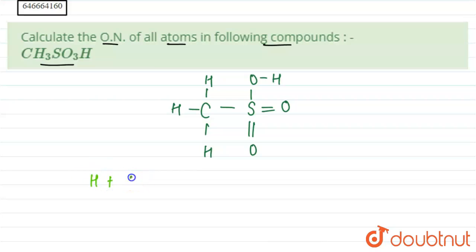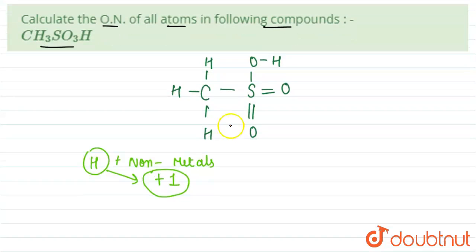hydrogen makes bond with non-metal, its oxidation state is always plus one. It can exist in plus one and minus one, and whenever it is making a bond with non-metal its oxidation state